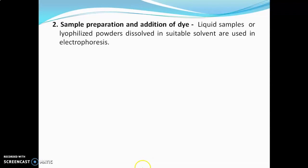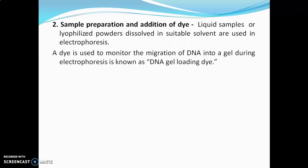Next is sample preparation and addition of dye. Liquid samples such as plasma proteins, serum proteins, PCR products, DNA, or RNA are diluted with a suitable solvent and then loaded on the gel. Lyophilized powders are dissolved in a suitable solvent and then used. During sample preparation, a tracking dye is added in the sample solution, which is used to monitor migration of DNA into the gel during electrophoresis.